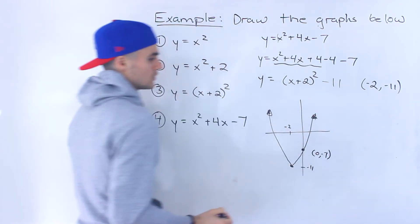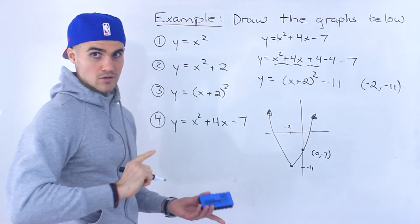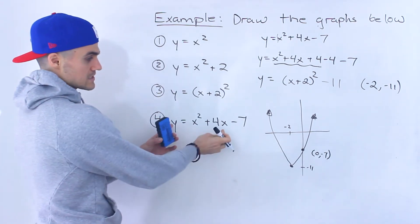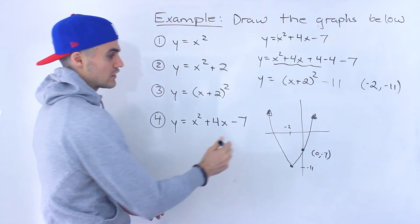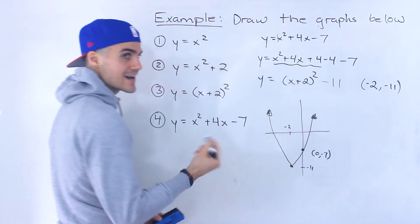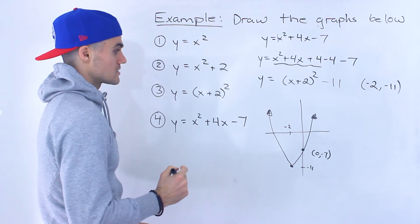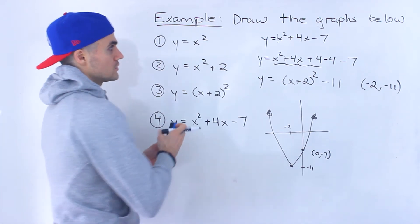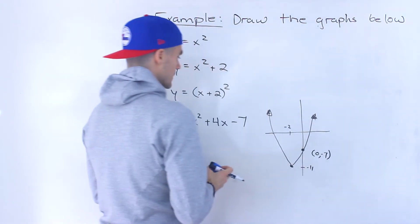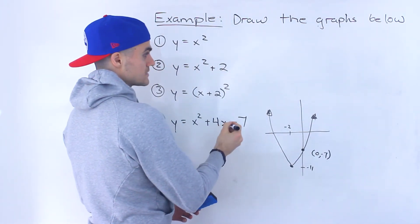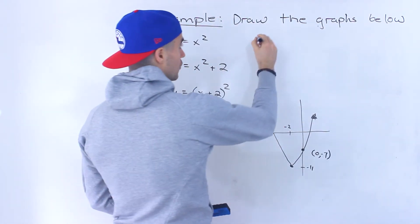Now another way you can graph parabolas is try to factor them, put them in factored form. But this parabola here, it's actually not going to factor smoothly. The x-intercepts, they're actually going to be decimal values. But you can find them out. You can still find the exact value of them if you want. So if we plug this into the quadratic formula.